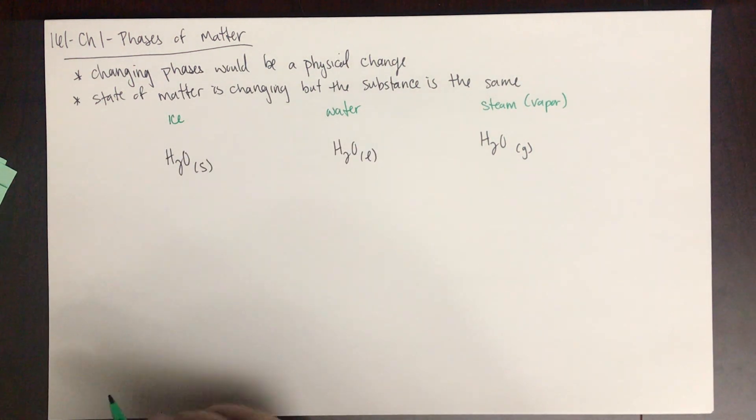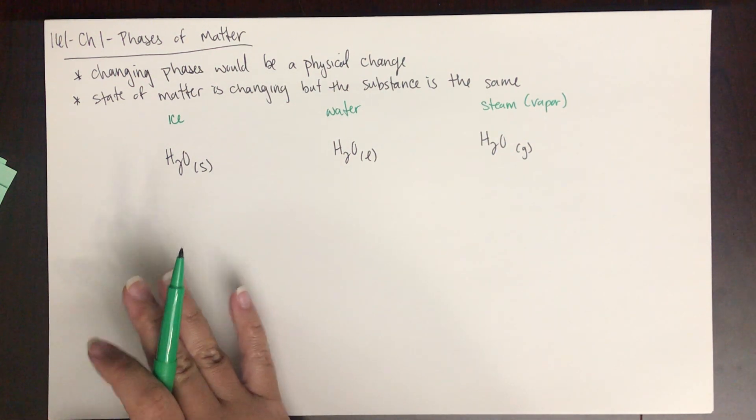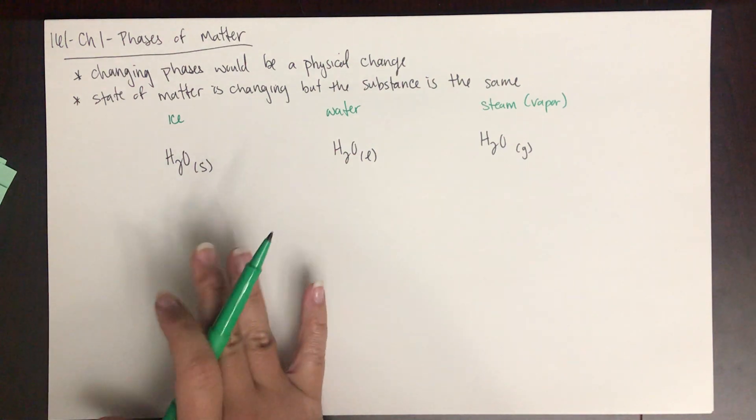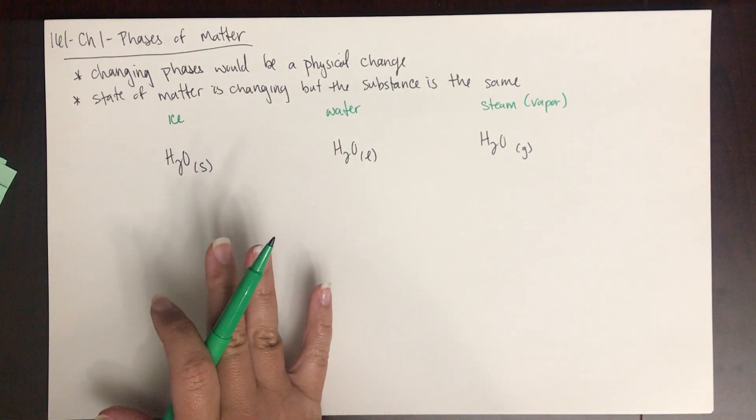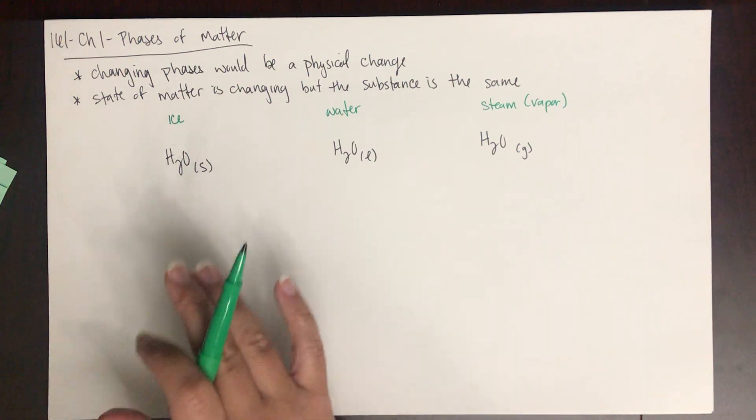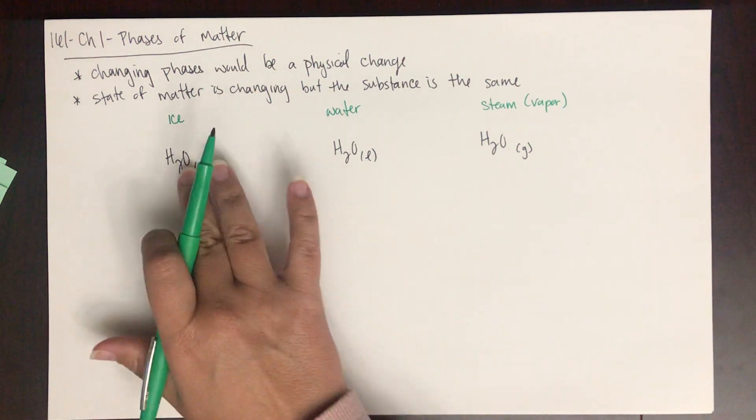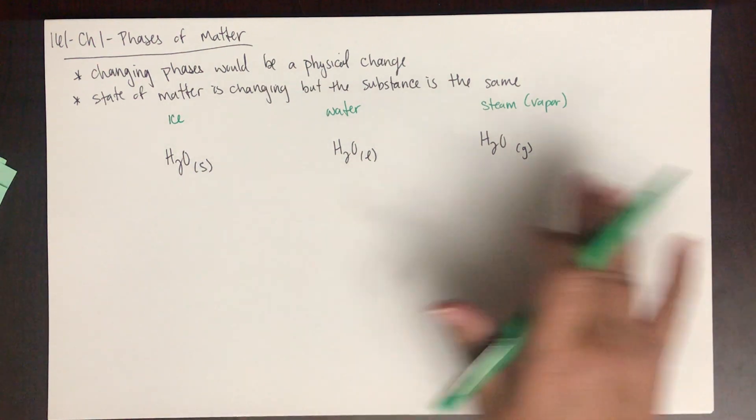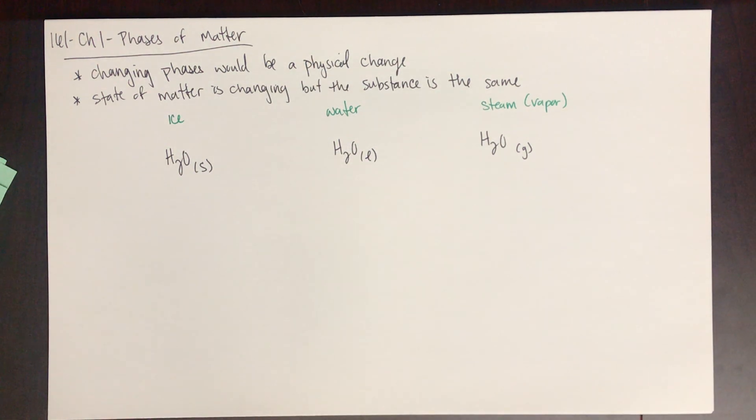We can have phase transitions. These phase transitions are physical changes. There's no chemical reaction happening. A chemical reaction is when bonds are breaking and forming. No bonds are breaking or forming when we go from solid to liquid to gas of the same substance.